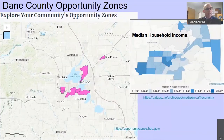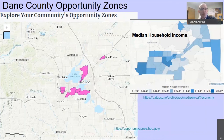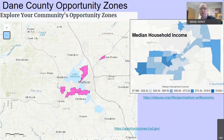These are Dane County opportunity zones — economically distressed communities defined by census tract. There are 8,700 of these in the country, and they've experienced minimal investment over decades. Several are on the south and north sides of Madison and Sun Prairie. Note that some of these low-income zones have a range of median household income of $7,500 to $28,000 — that's not a lot of money for food, housing, and transportation.